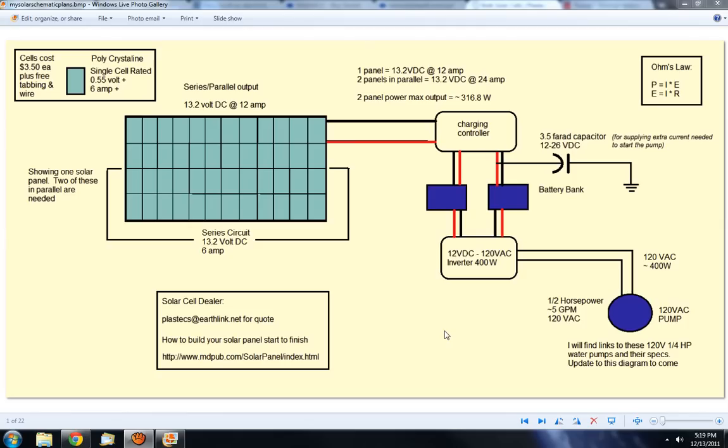I finally decided to sort of draw it up in a kind of schematic slash flowchart form. Here's my diagram that I came up with. Basically I would build two of these solar cells.